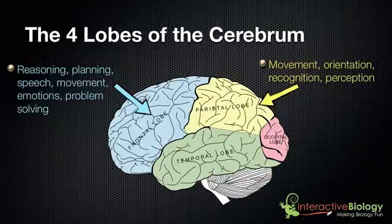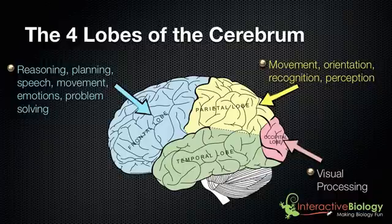The occipital lobe is involved in visual processing. This is why sometimes if you get hit to the back of the head, you see stars — that has to do with visual processing.